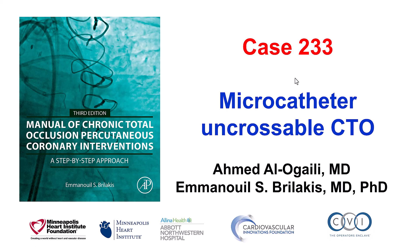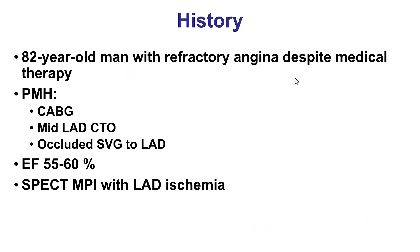This is Ahmed Alogaili and Manos Brilakis presenting case 233 for the Manual of CTO Interventions. This is a case of a microcatheter uncrossable CTO. The patient was an elderly gentleman who had significant angina due to ischemia in the LAD territory. He had a previous vein graft to the LAD that was occluded and a mid-LAD CTO, with normal ejection fraction.